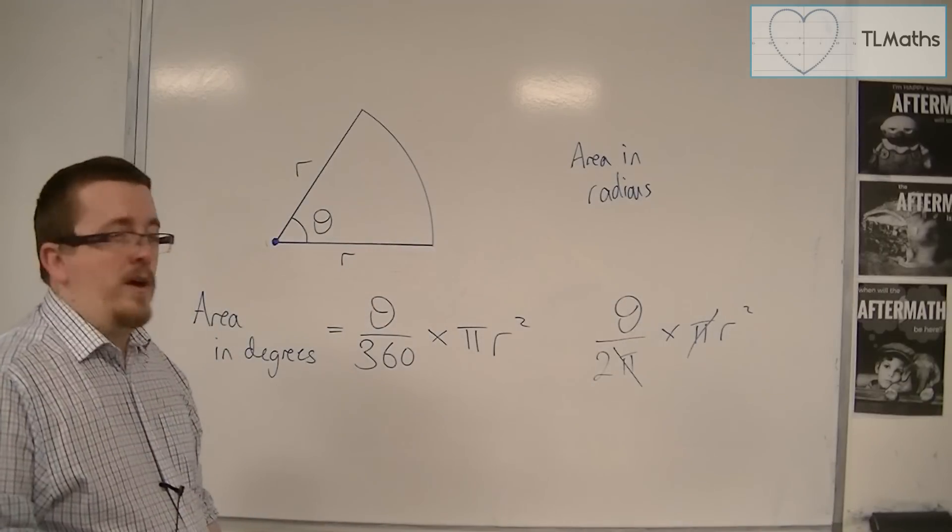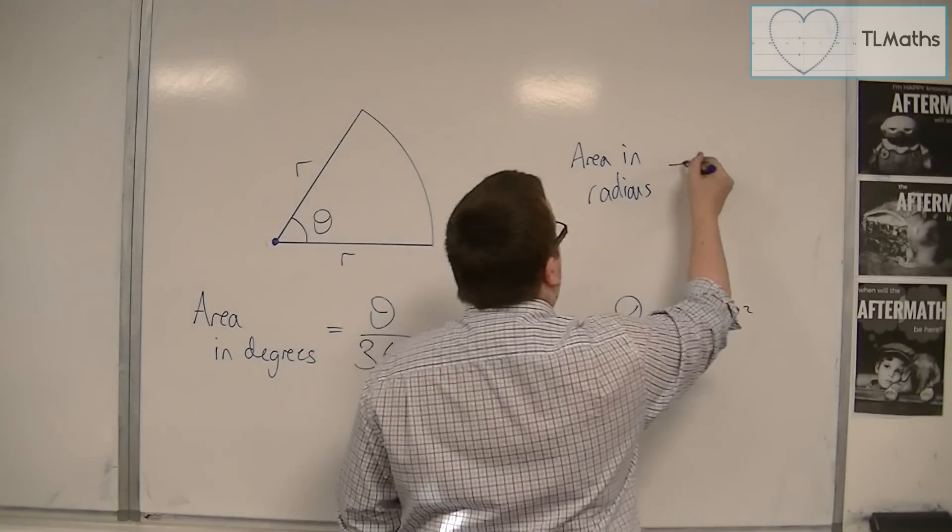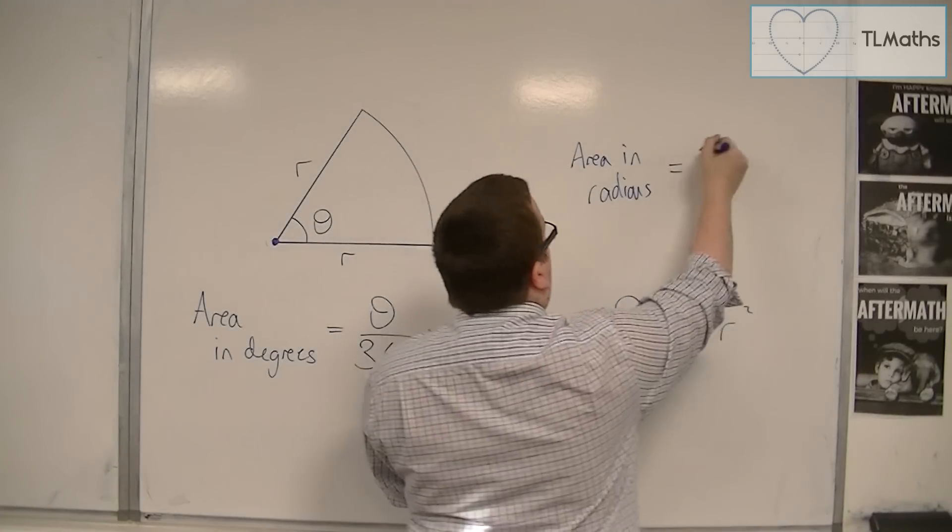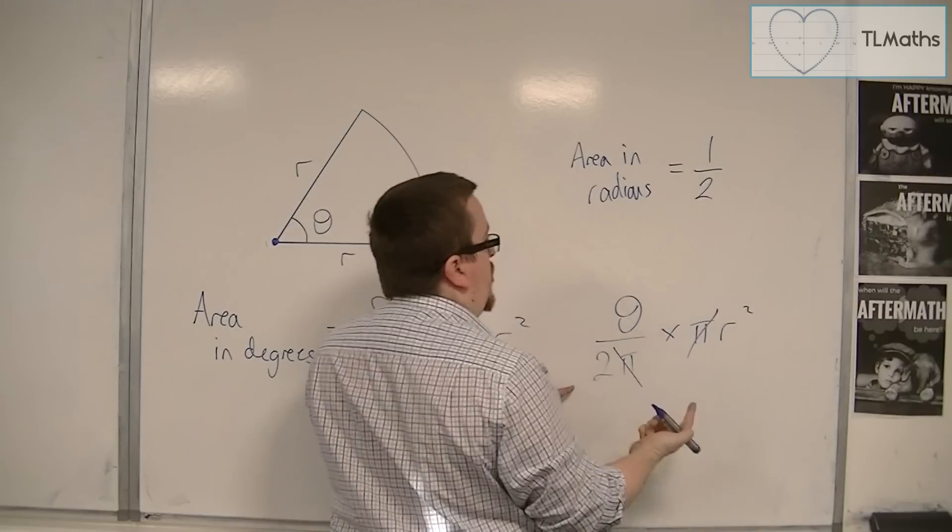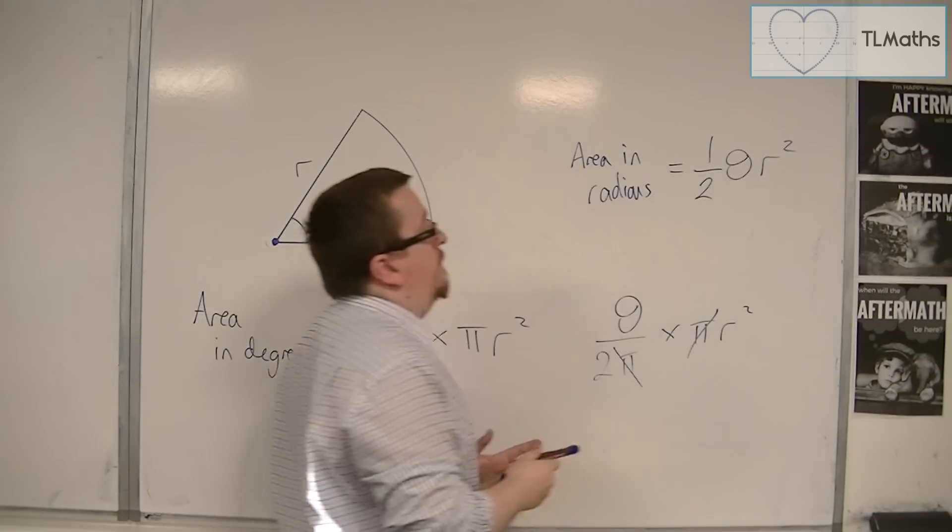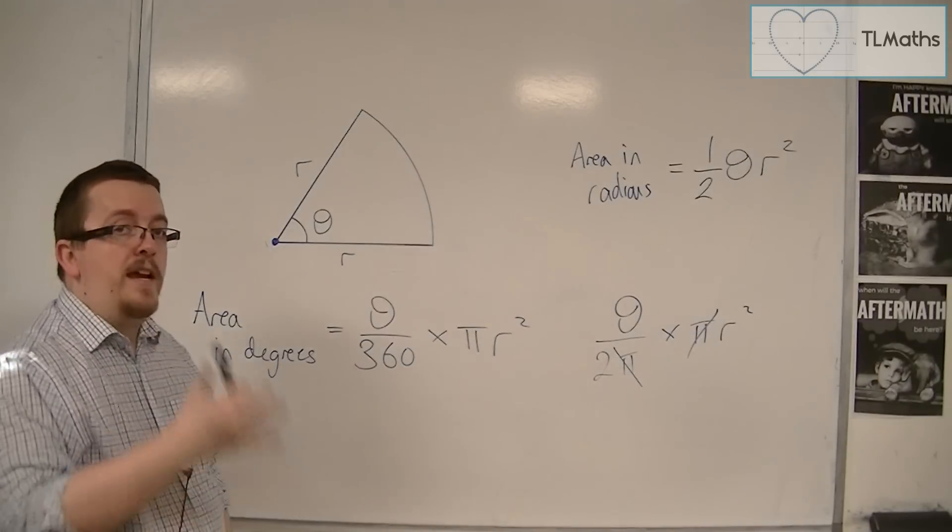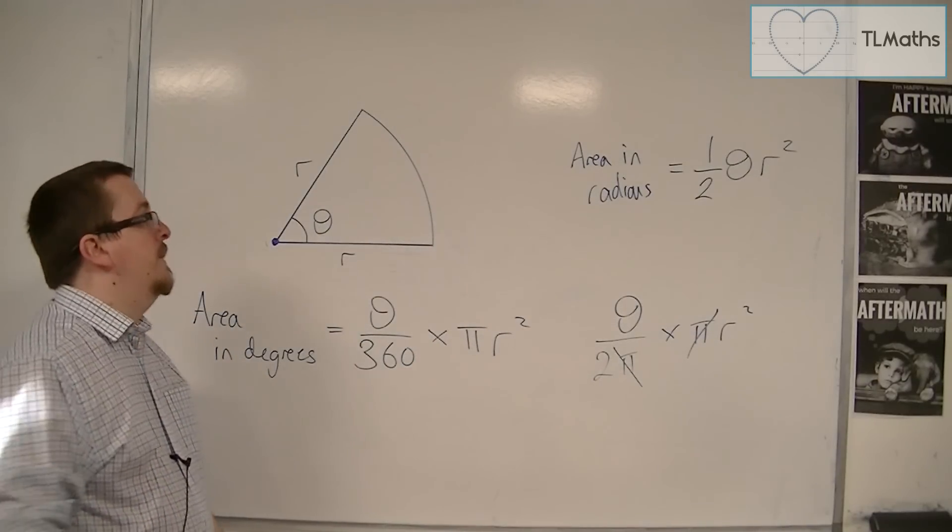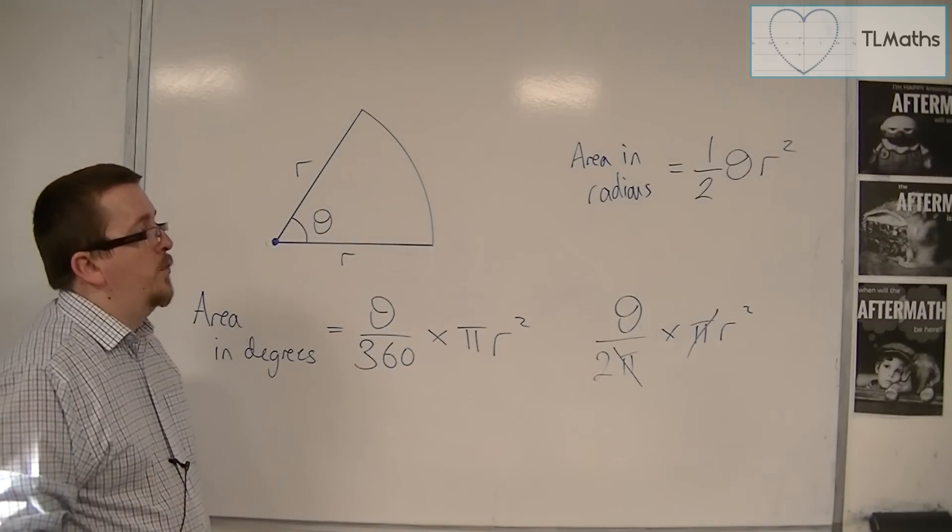I'm left with 1 half, that divided by 2, it's 1 half, theta r squared. And that is the area of a sector in radians, and is a lot quicker to work with.